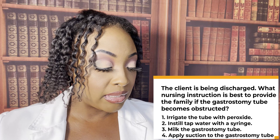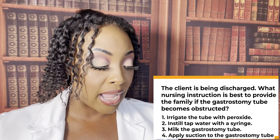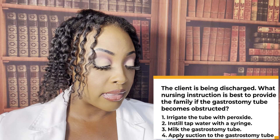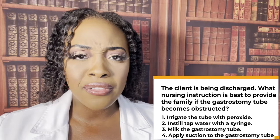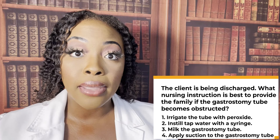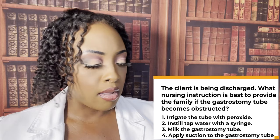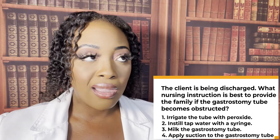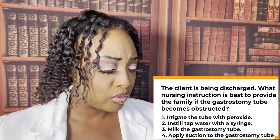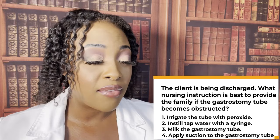The client is being discharged. What nursing instruction is best to provide the family if the gastrostomy tube becomes obstructed? One, irrigate the tube with peroxide. Two, instill tap water with a syringe. Three, melt the gastrostomy tube. Or four, apply suction to the gastrostomy tube. The correct answer is two: instill tap water with a syringe — teach the patient how to flush the tube. Peroxide is wrong. Melting the gastrostomy tube is usually ineffective; flushing is what works. You never apply suction to a gastrostomy tube. Choice two is the correct answer.